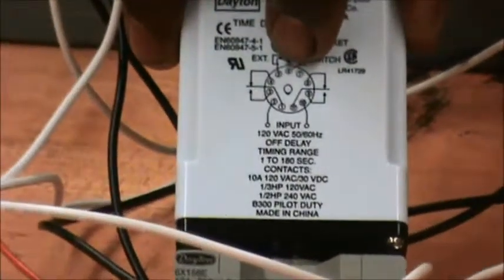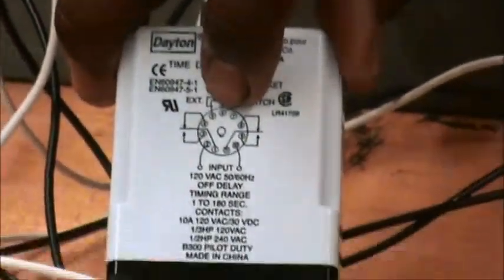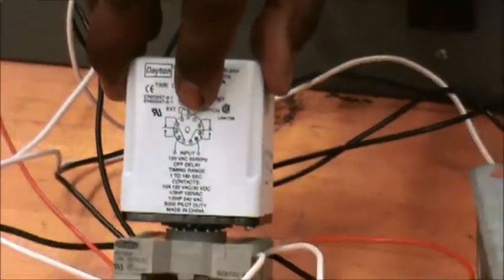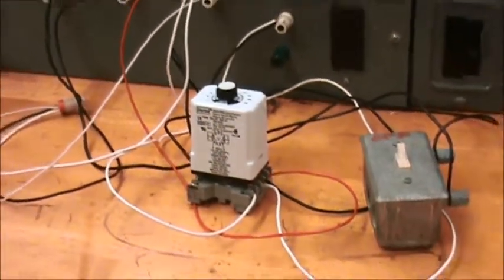When you short the two wires together, that's energizing the contact, and when you break it apart, that's de-energizing the contact or de-energizing the coil.